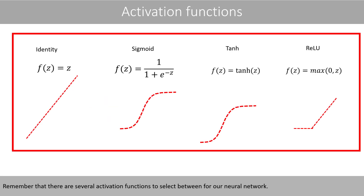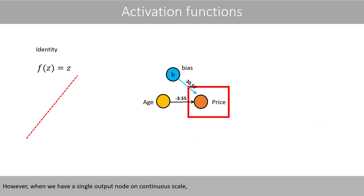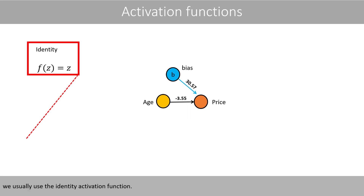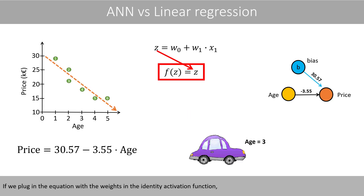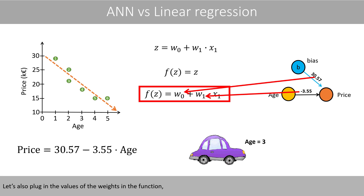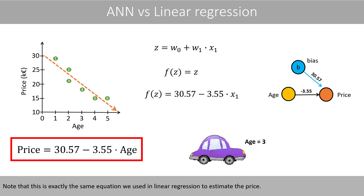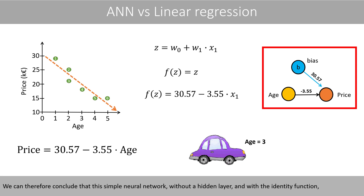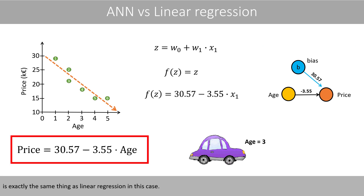Remember that there are several activation functions to select between for our neural network. However, when we have a single output node on a continuous scale, we usually use the identity activation function. If you plug in the equation with the weights into the identity activation function, we will have the following function that is used to compute the value of the output node. Note that this is exactly the same equation we used in linear regression to estimate the price.